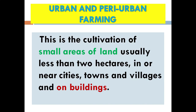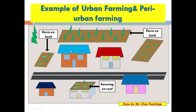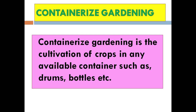Urban and peri-urban farming is the cultivation of small areas of land, usually less than two acres, in or near cities, towns, and villages, and on buildings. From the diagram you can see farms built in close vicinity to buildings, and also farming being done on the roof of a building — a deck roof — using less land space and more air space.